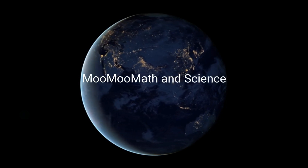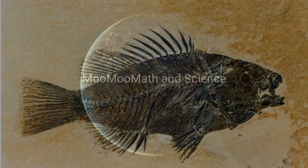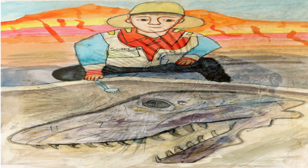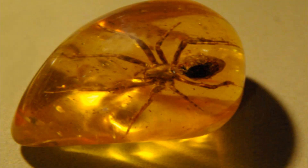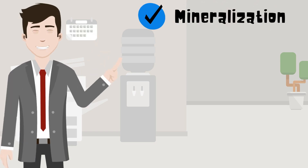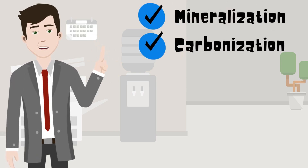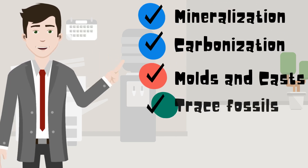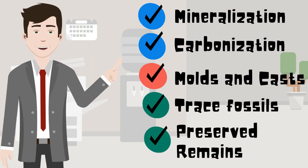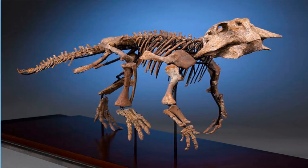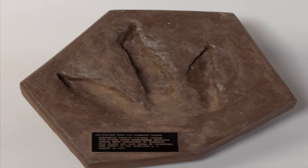Welcome to MooMath and Science and Different Types of Fossils. Fossils give us a glimpse into what life was like in the past. In this video I will cover several different types of fossils including mineralization, carbonization, molds and casts, trace fossils, and preserved remains. Fossils range from dinosaur fossils to footprints that are thousands of years old.